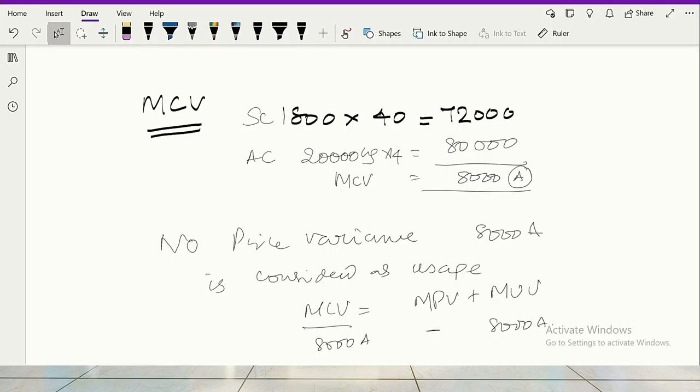When you don't consider fixed cost, please listen very carefully, then the volume variance will not come into the picture. Remember that point. Whenever marginal costing technique is applied in standard costing, fixed cost will not come into the picture. When fixed cost doesn't come into the picture, volume variance will not be there.